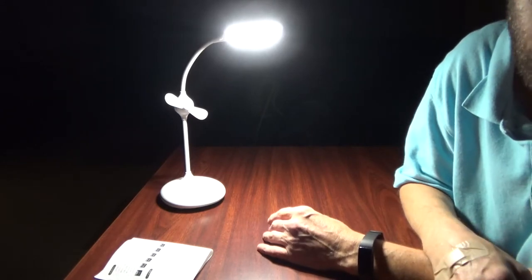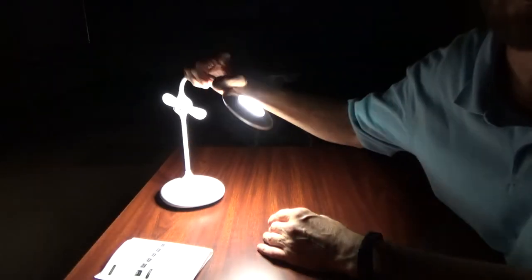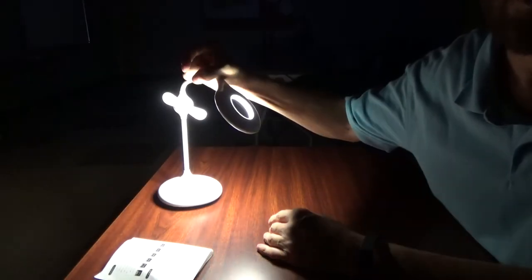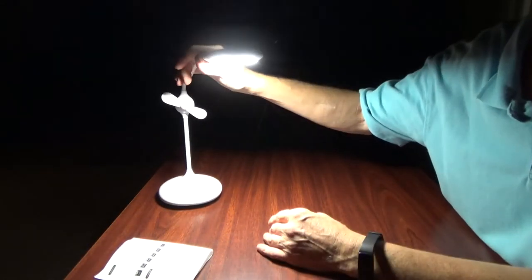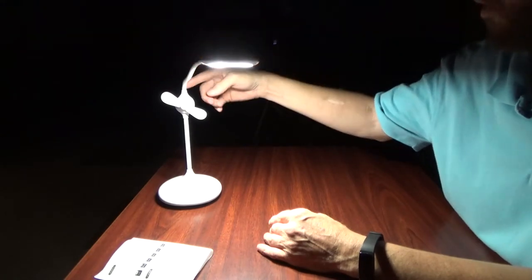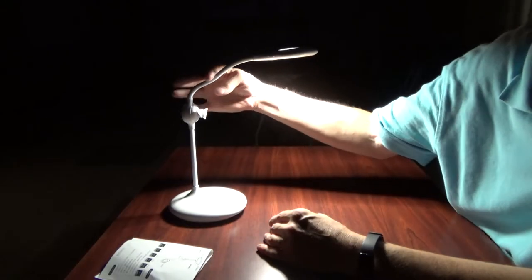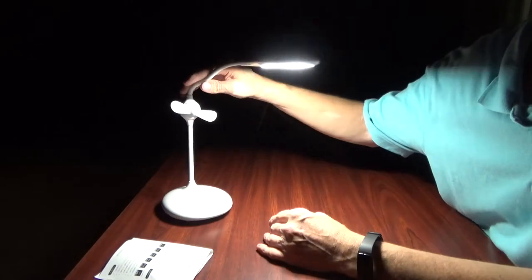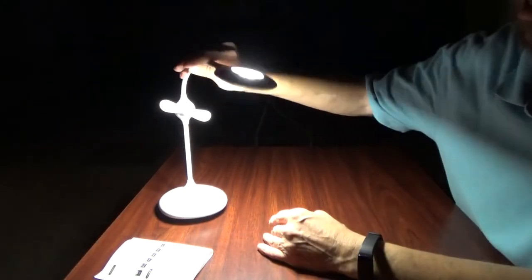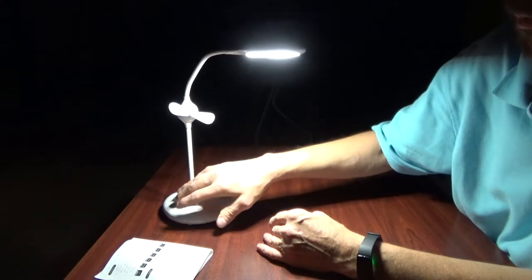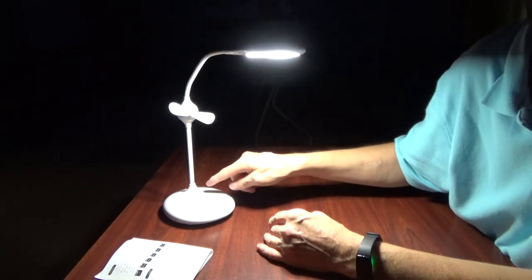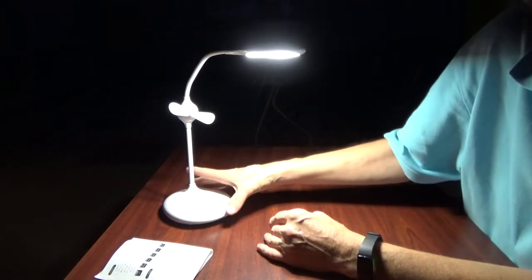There are some measurements, but because this is flexible, depending on where you adjust it, the height varies. In the way it's set up right now, where the curvature is just over the fan area, it sits close to 14 inches in height. Fully extended, it would be taller. The base is almost 5.5 inches in size.